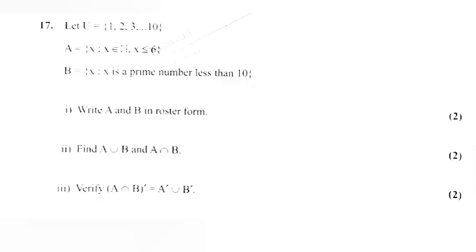Problem 17. Let U equal set {1, 2, 3, ..., 10}; A equal set {x such that x belongs to N, x less than or equal to 6}; B equal set {x such that x is a prime number less than 10}.